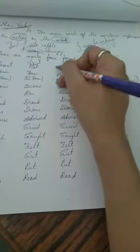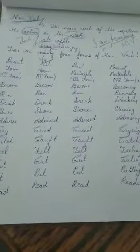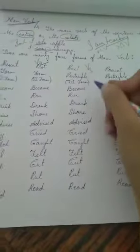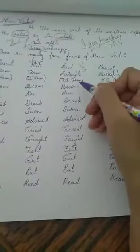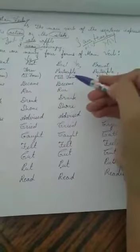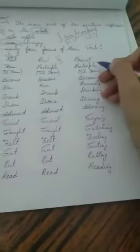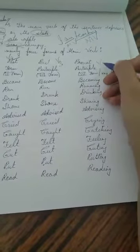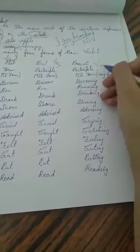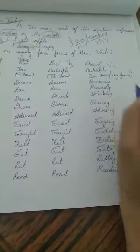Next is past participle — we use the third form of verb, V3, in present perfect, past perfect, and future perfect. Remember this. For present participle, the fourth form of verb, we use this form in present tense, past tense, and future tense.